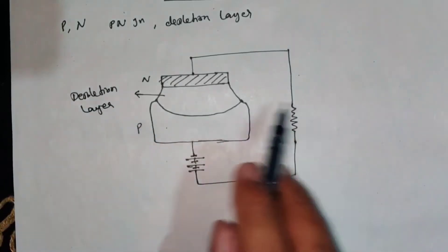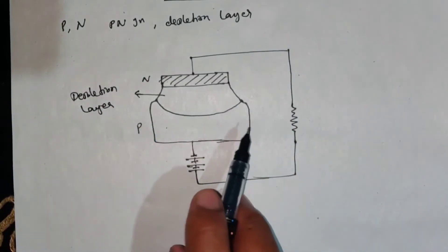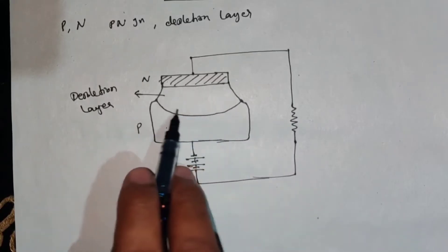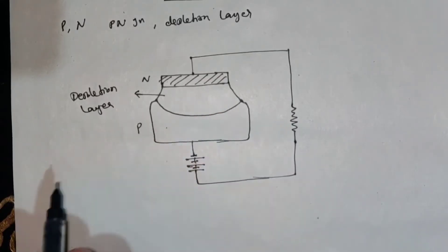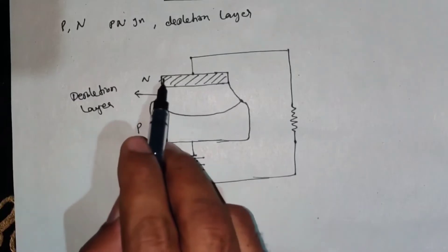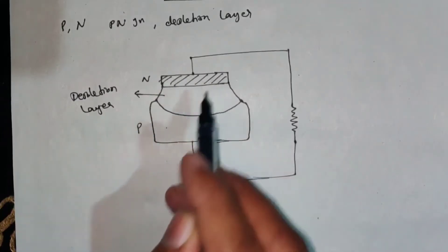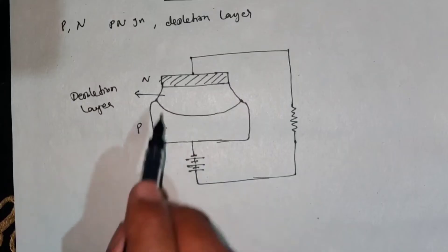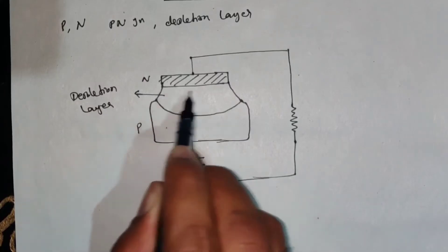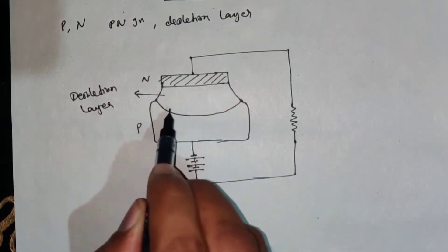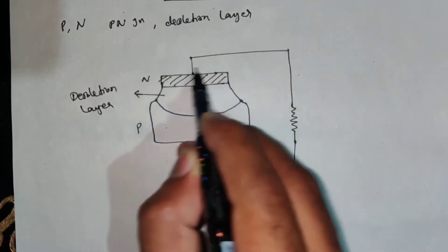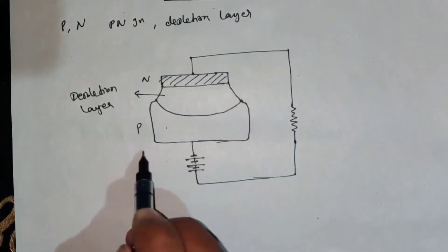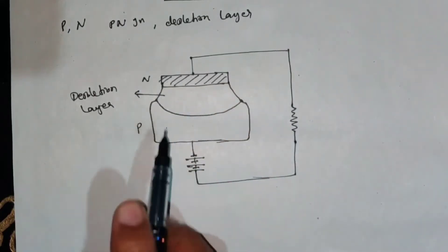This is the depletion layer. It is free from charge carriers. In the N-type, there are electrons as charge carriers. In the P-type, there are holes as charge carriers. In the depletion layer, this is basically a P-N junction.